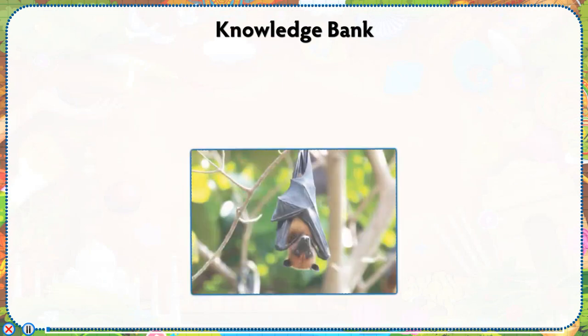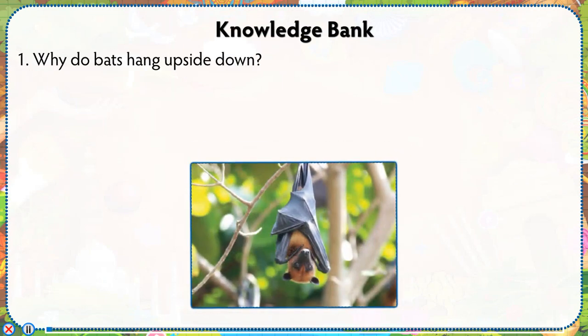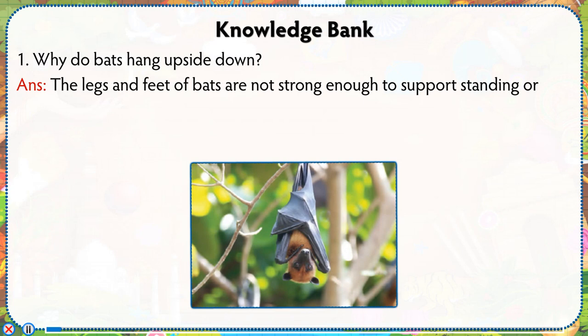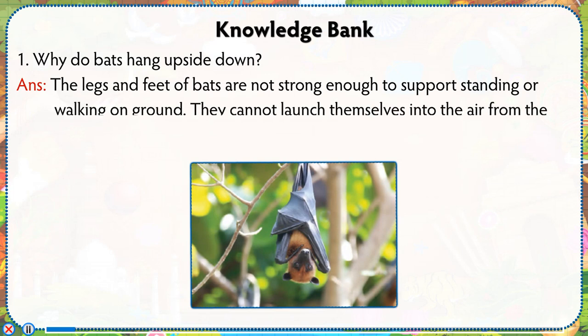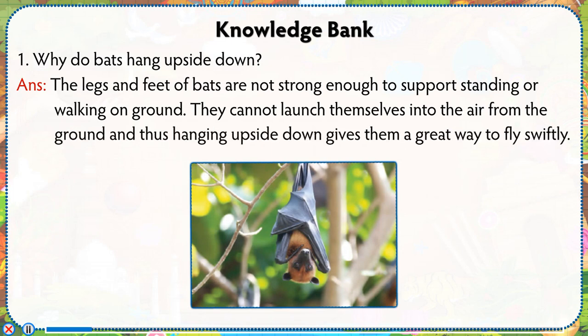Knowledge Bank: Why do bats hang upside down? The legs and feet of bats are not strong enough to support standing or walking on the ground. They cannot launch themselves into the air from the ground, and thus hanging upside down gives them a great way to fly swiftly.